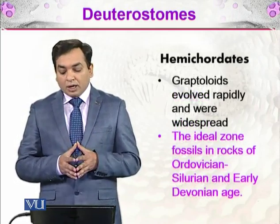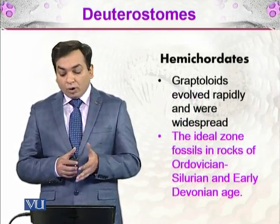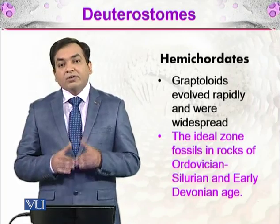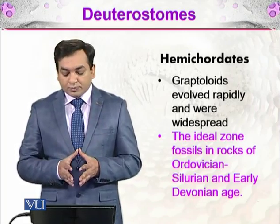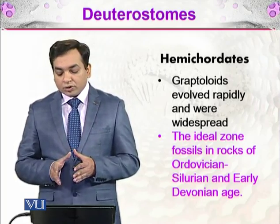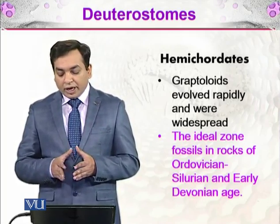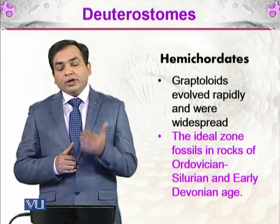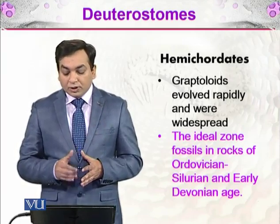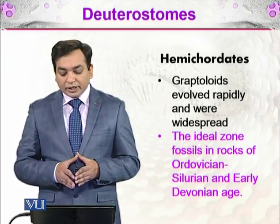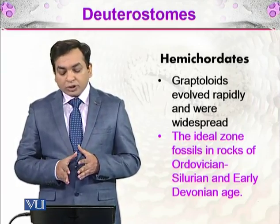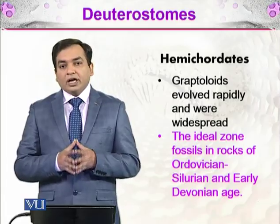Graptolites evolved rapidly and were widespread. They are the ideal zone fossils in rocks of Ordovician, Silurian, and early Devonian age. So the best fossils of the graptolites would be found in rocks of Ordovician to Silurian and early Devonian age.